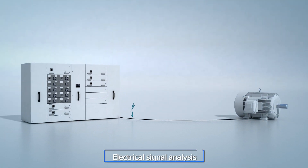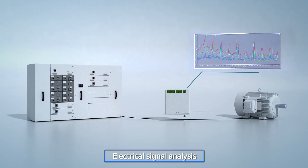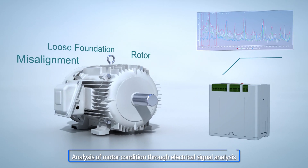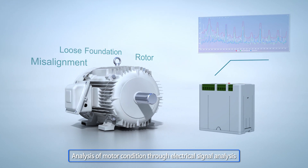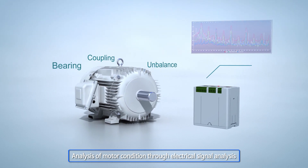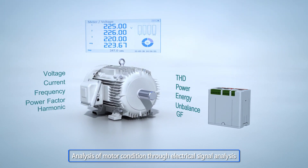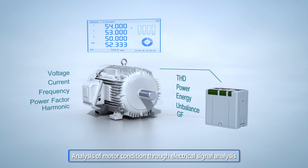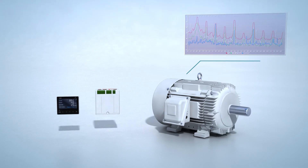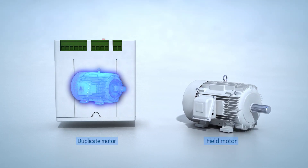The IoT Motor Diagnosis System analyzes the voltage and current signal supplied to the motor. To do this, you only need to connect a simple sensor between the motor and the motor distribution board. The Diagnosis System then analyzes the current state of the motor and makes estimations of the motor health.